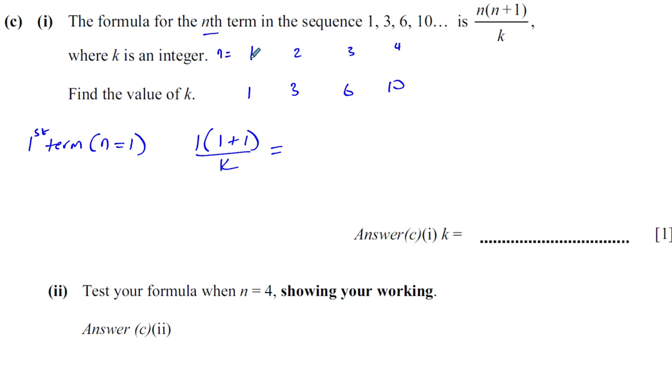That should generate the first term of the sequence, which is 1. So you have 1 times 2, which is 2, over k equals 1. So 2 over k equals 1, so k is equal to 2. Simple as that.